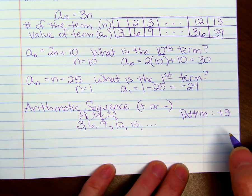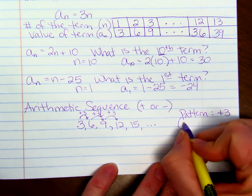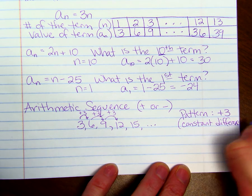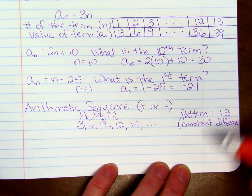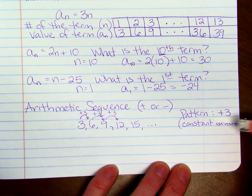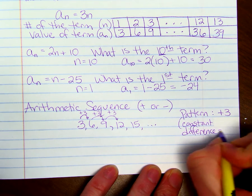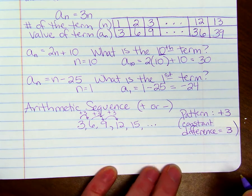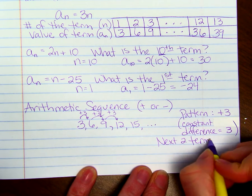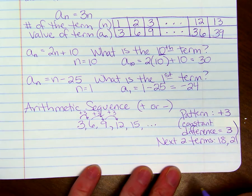The constant difference we call 3. If we want to find the next two terms, we would just add 3 to 15 and get 18. Add 3 to 18 and get 21.